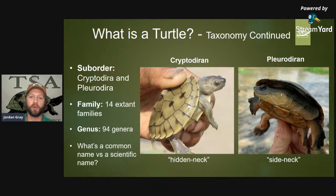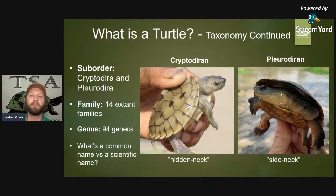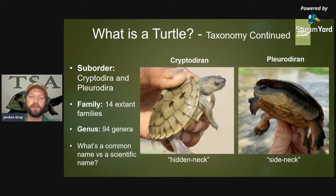Another pleurodire we work with is in South America. We were recently able to create a whole preserve in Colombia with our partners Rainforest Trust and Wildlife Conservation Society to protect the Dahl's toad-headed turtle. You can find more on our website. The Matamata is also a pleurodire — it moves its neck to the side and is very cryptic, looking like leaf camouflage on a submerged river floor.